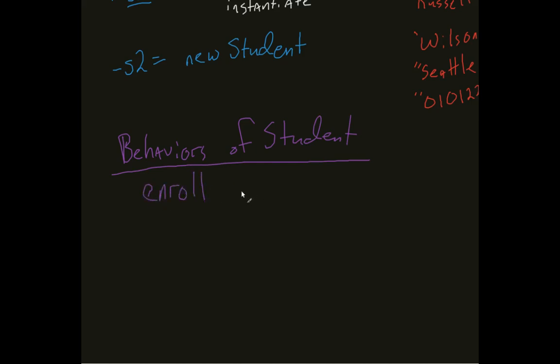we have maybe something like an enroll, which that method, what it does is it takes in some string course and it adds it to a collection of courses that the student already belongs to. Or say, for example, they have a withdrawal. The same kind of concept is going to go in there. They're going to have a string with that course that they withdraw from.